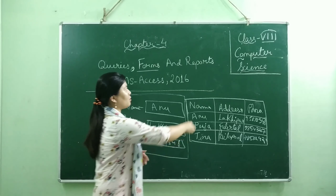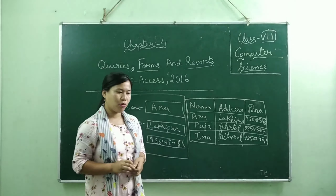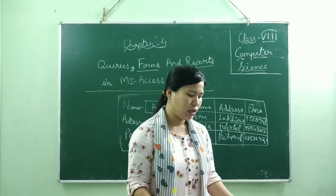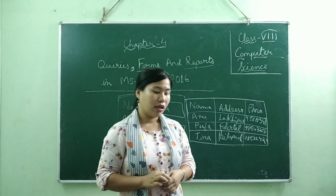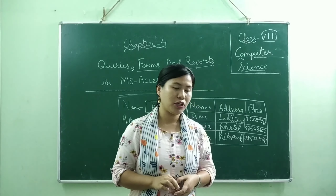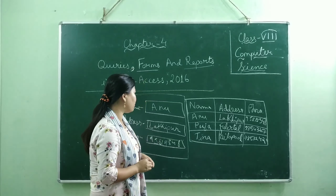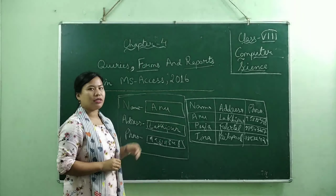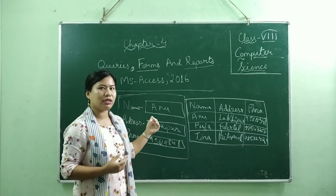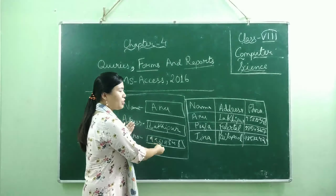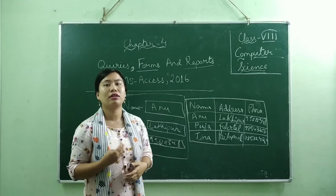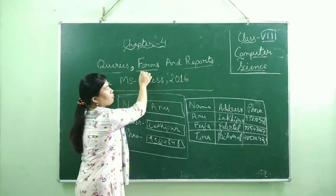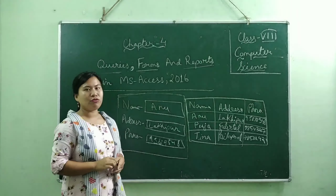Now let's move on to reports. You can turn to your book, page number 44, the introduction part. A report is an effective way to present your data in a printed form. For example, the form which you have already created — when you want to take a printout of that form, that becomes a report. So to learn how to create queries, forms, and reports in MS Access, we will move on to the computer screen.